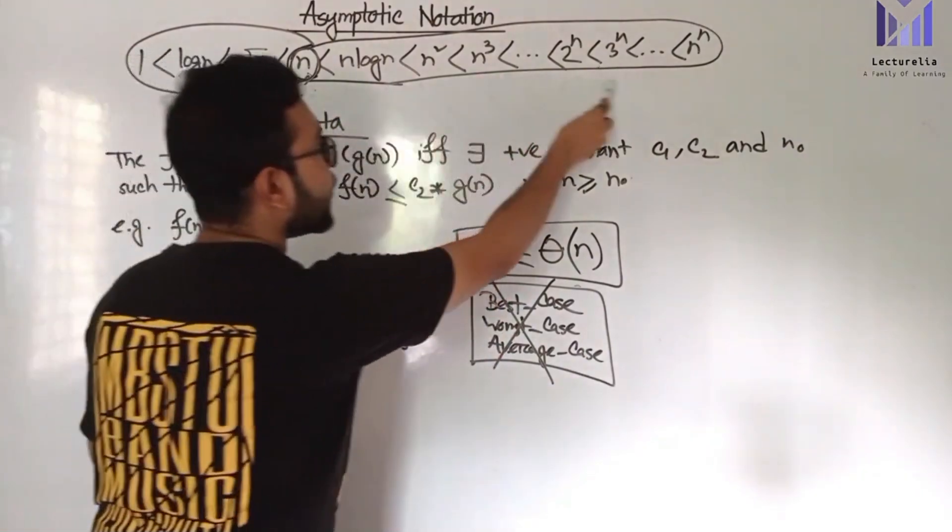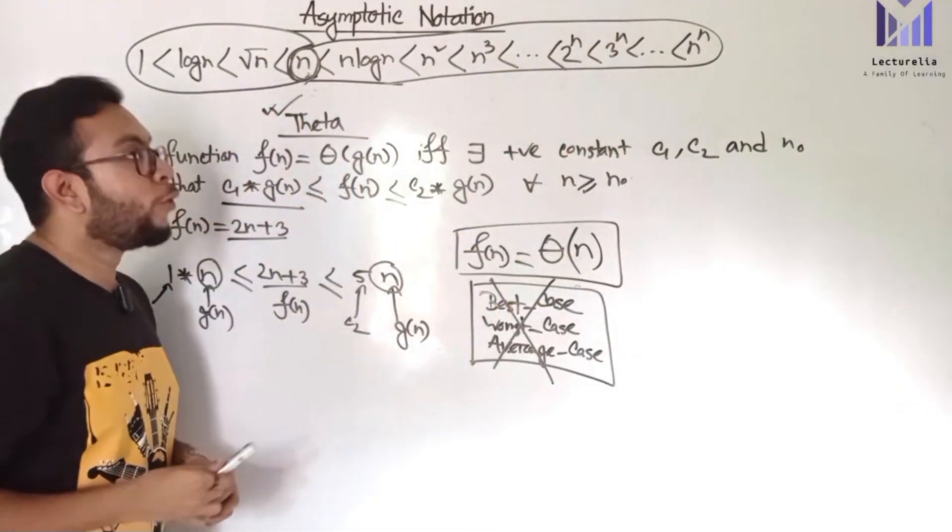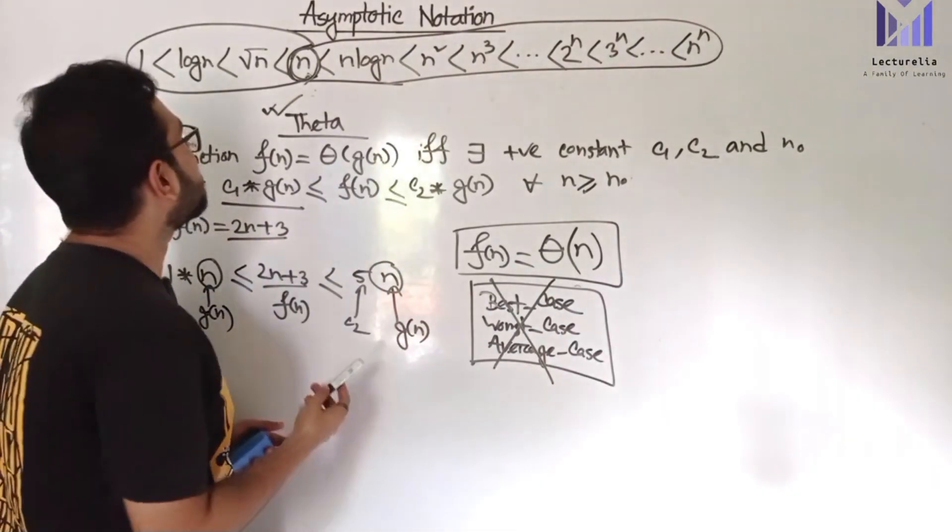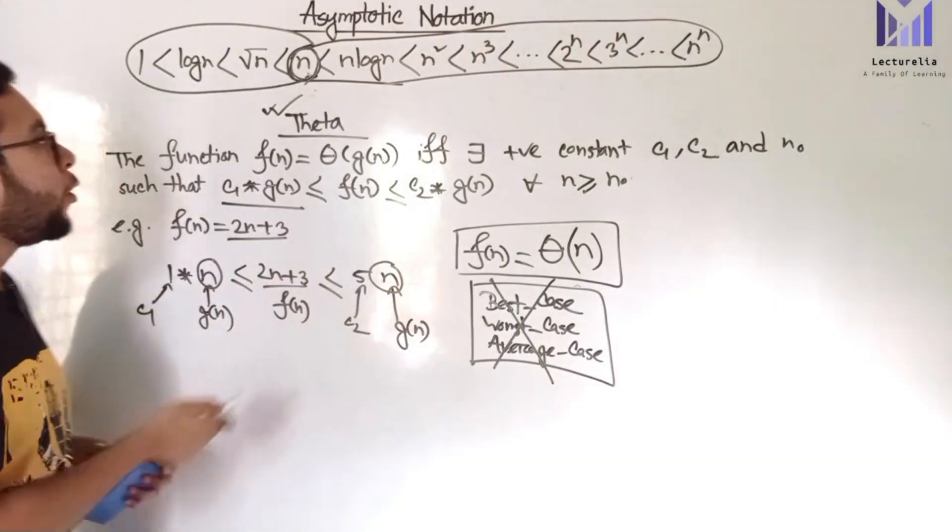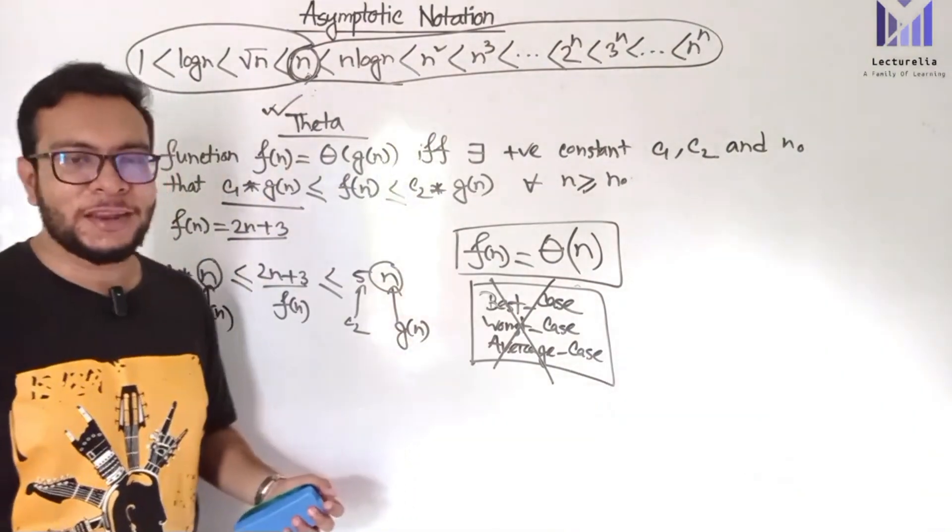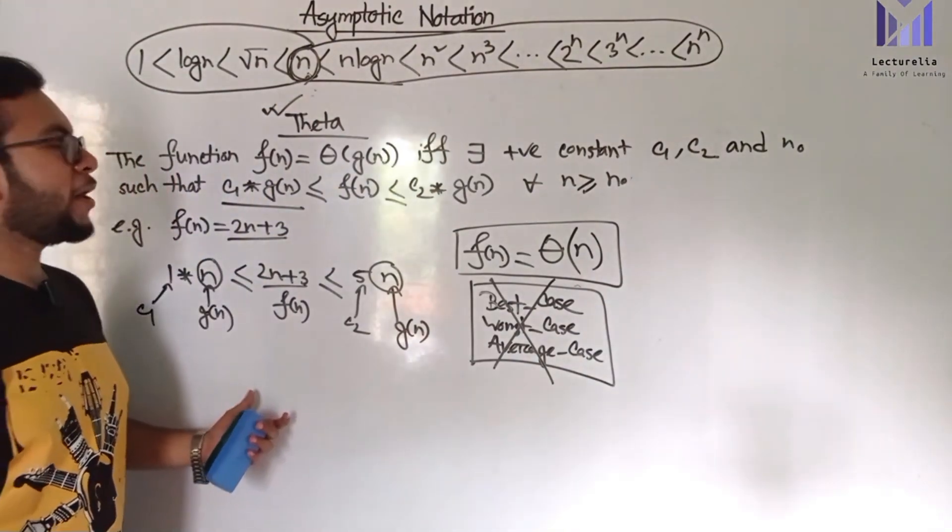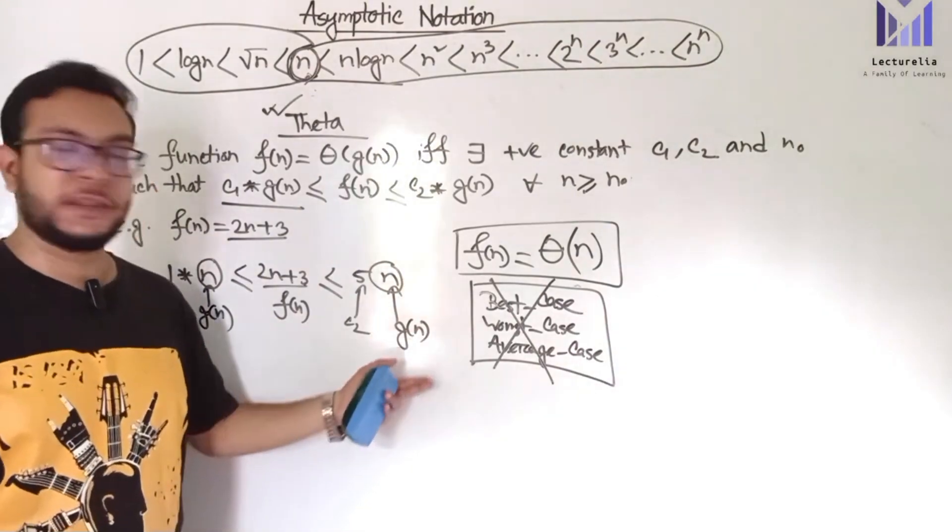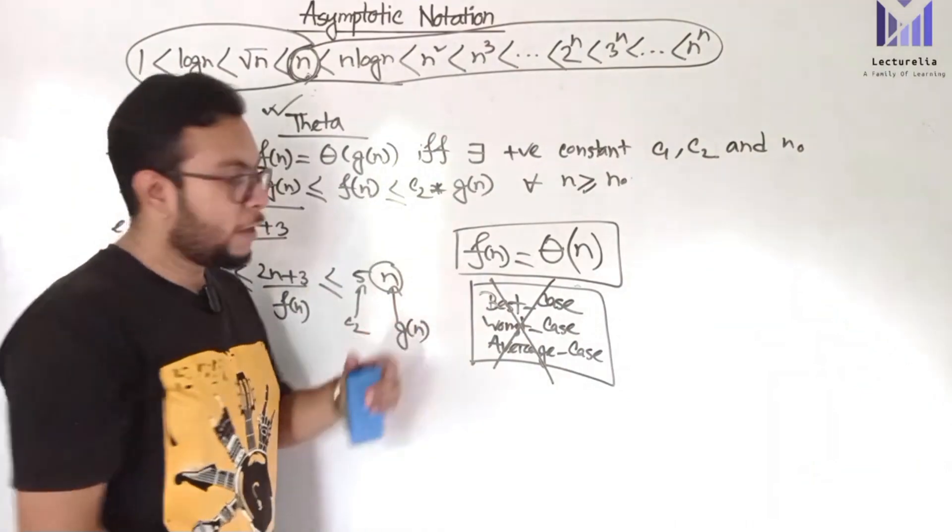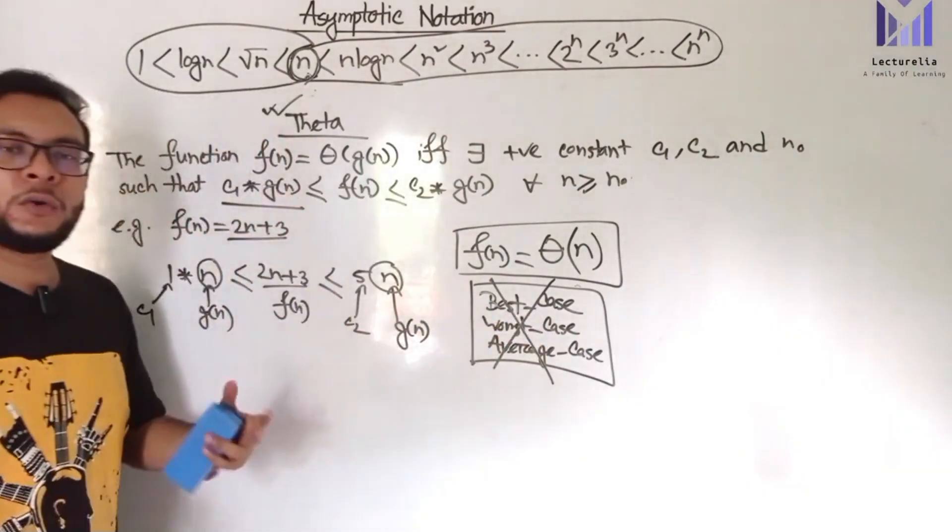If there is a misconception that Big O represents the worst case - no, this is wrong. Big O, Big Omega, and Theta are not about worst case, best case, or average case.